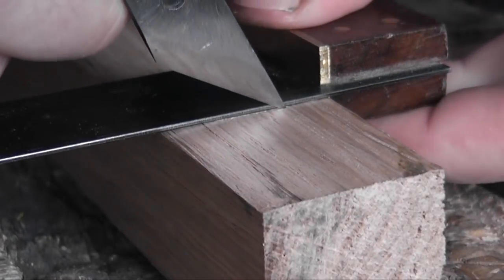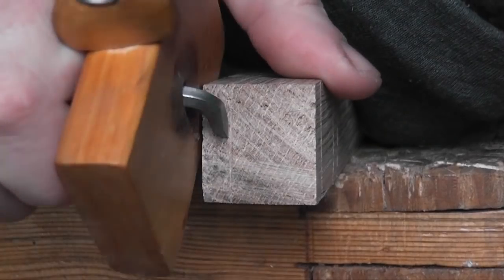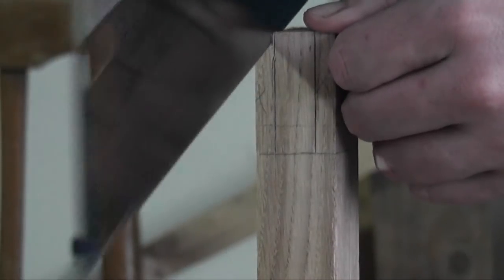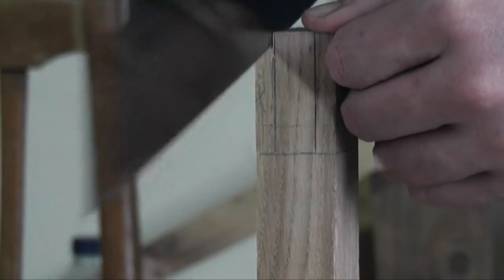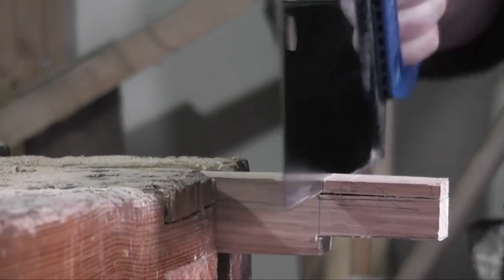Here I'm marking out the tenons of the stretchers that will be draw bored in later with some walnut pegs. I don't know if walnut is exactly a good material for it but it's just what I had on hand and it was going to create a kind of contrast so I went for that.